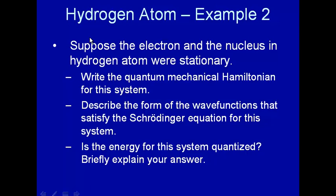Let's consider another example using the hydrogen atom and the Schrödinger equation and quantum mechanics. Let's suppose that the electron and the nucleus were stationary. They didn't move. And that's our system.